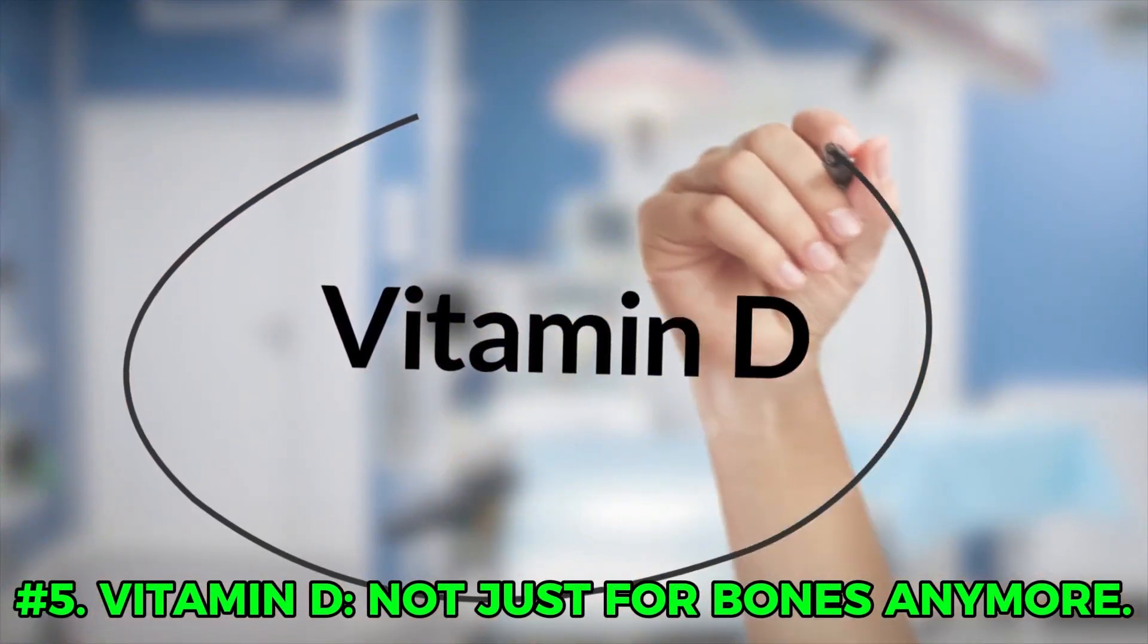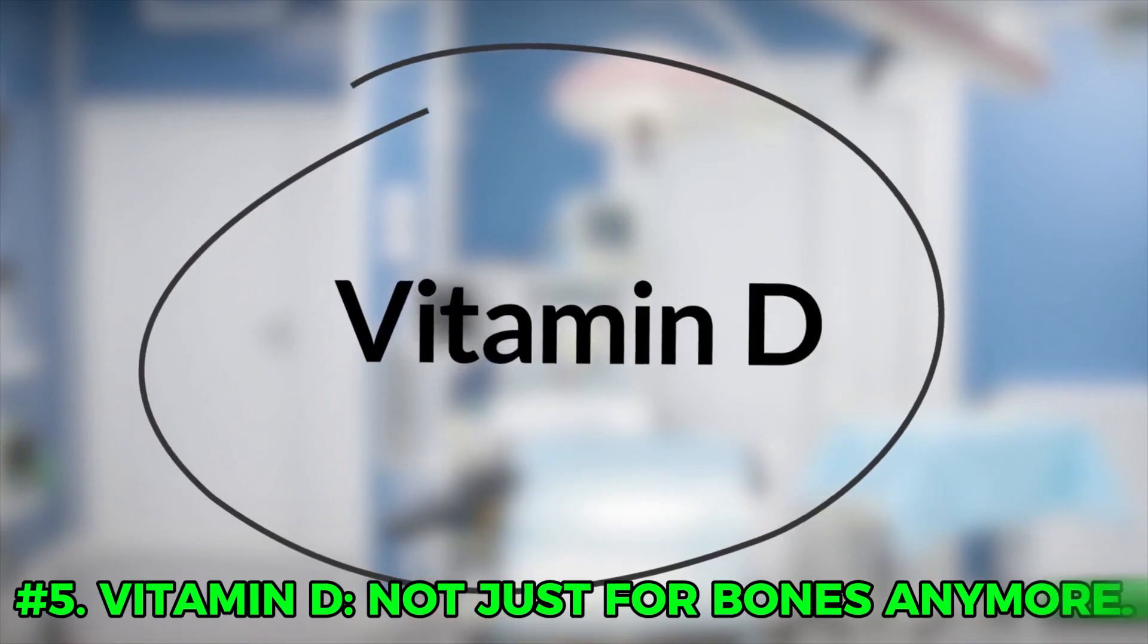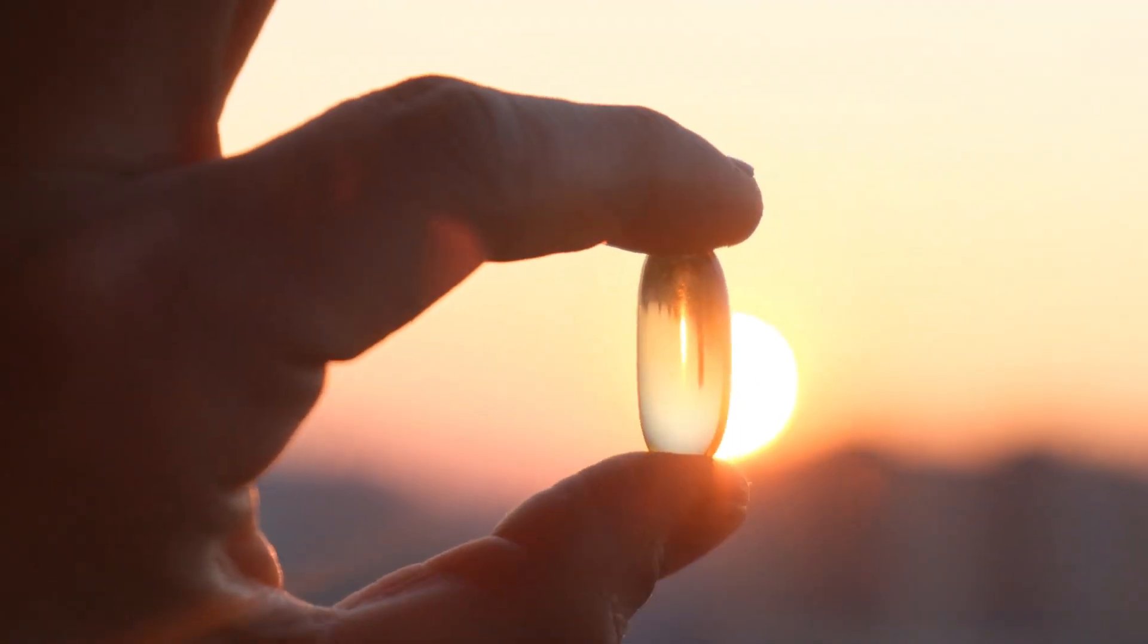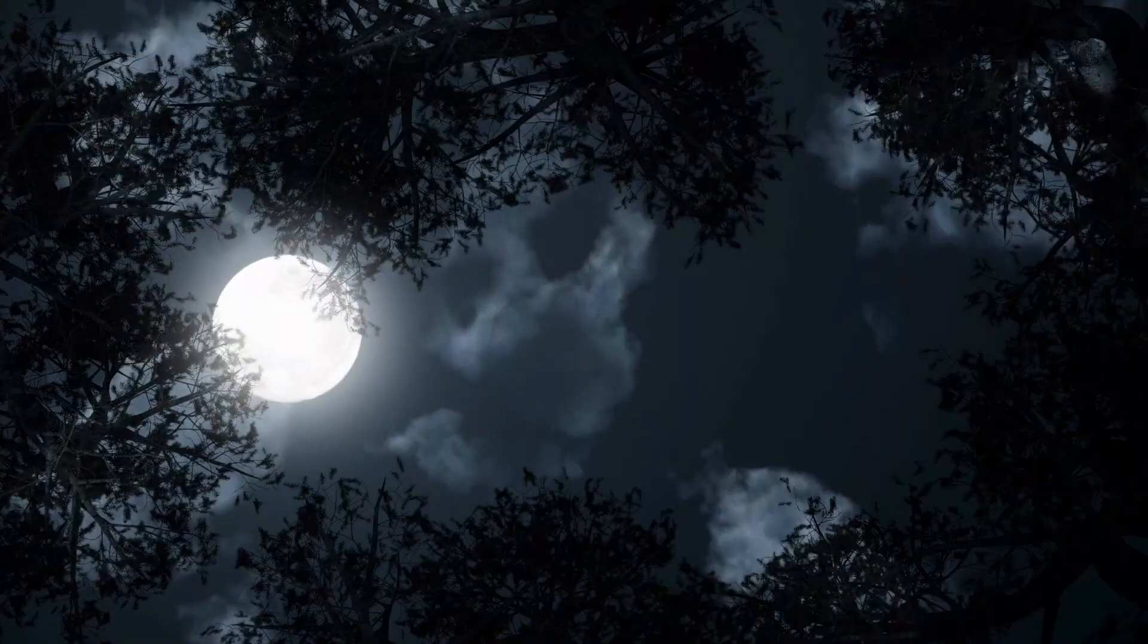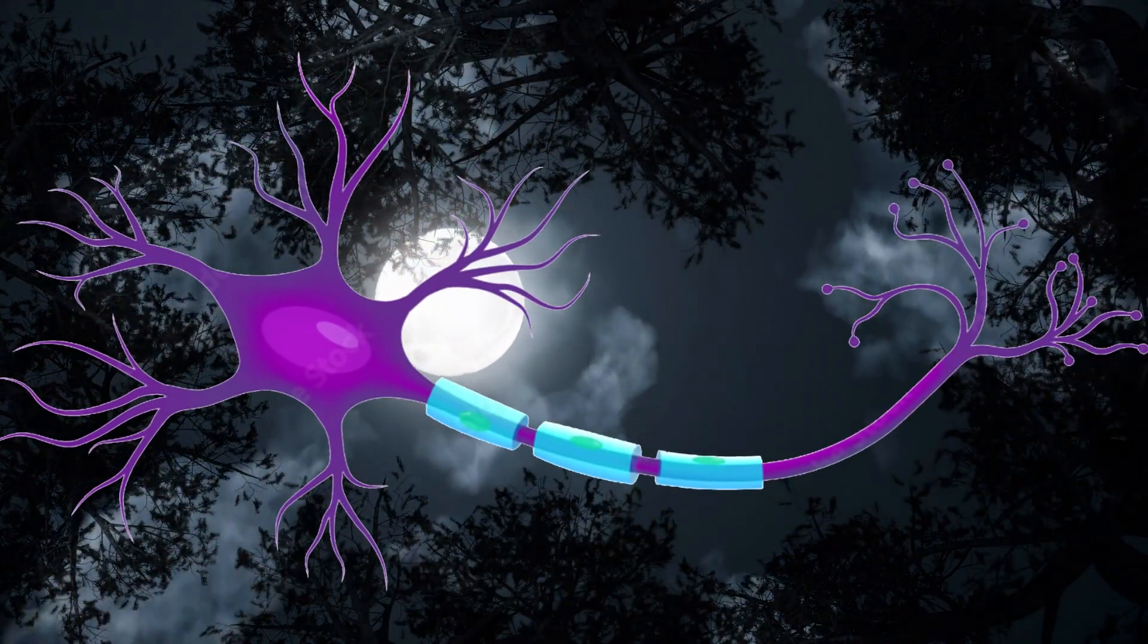Number 5: Vitamin D, not just for bones anymore. You might know vitamin D as the sunshine vitamin that keeps your skeleton from crumbling, but it also moonlights as a nerve function specialist.